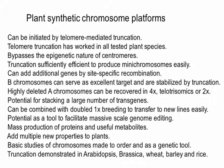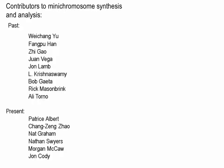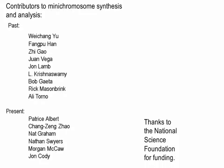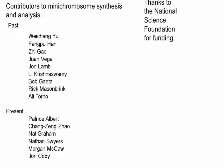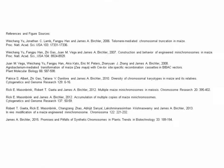We are aware that truncation has been demonstrated in Arabidopsis, brassica, wheat, barley, and rice, so we think it has applicability to most plants of interest. I'd like to note the contributors to mini-chromosome synthesis past and present: Patrice Albert, Chang-Zeng Zhao, Matt Graham, Nathan Swyers, Brogen McCaw, and John Cody. I also want to thank the National Science Foundation for funding these experiments on engineered mini-chromosomes. This final slide has references to the production of engineered mini-chromosomes and citations to the source of figures. Thank you for listening.